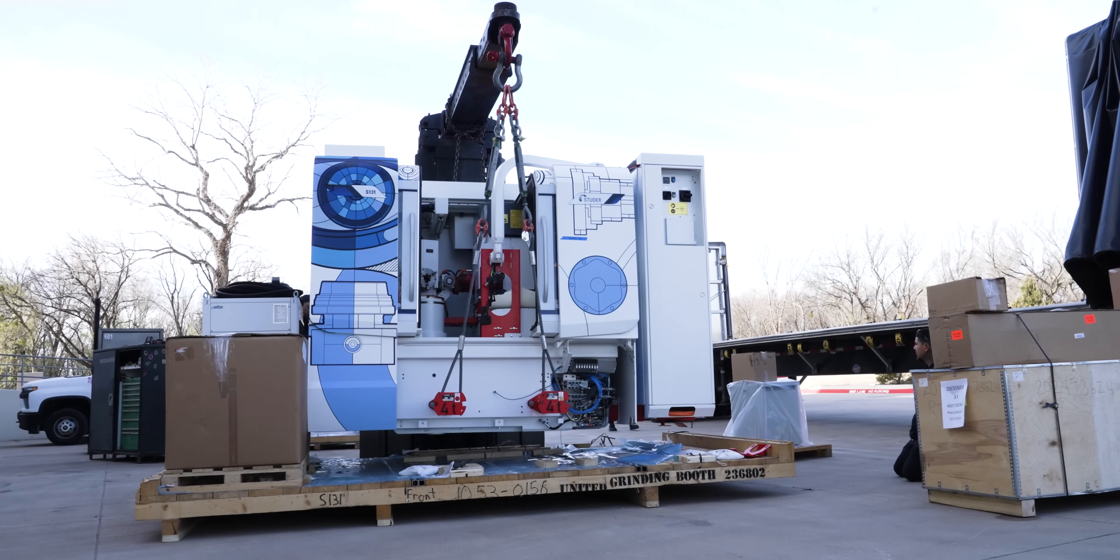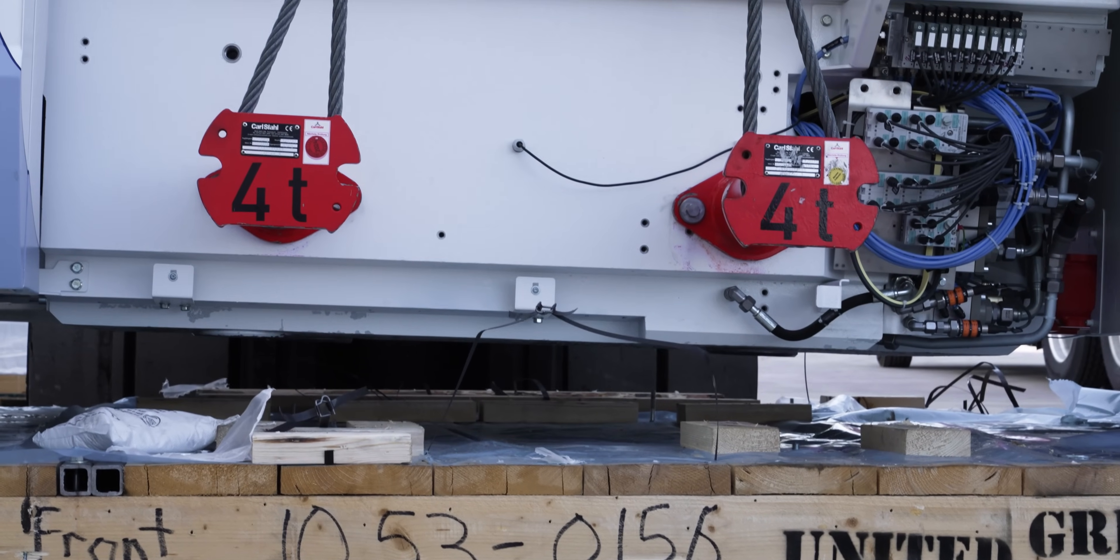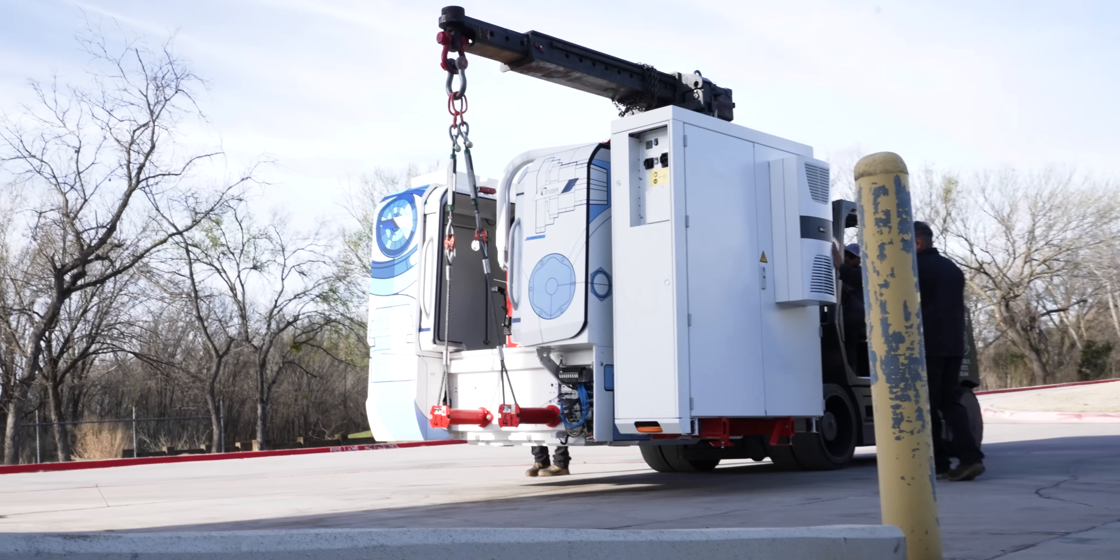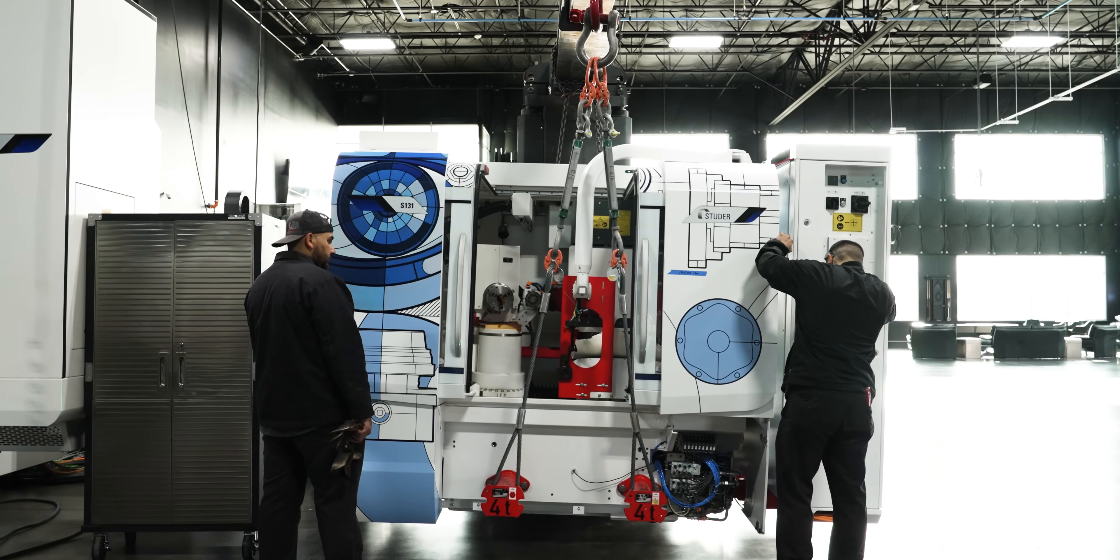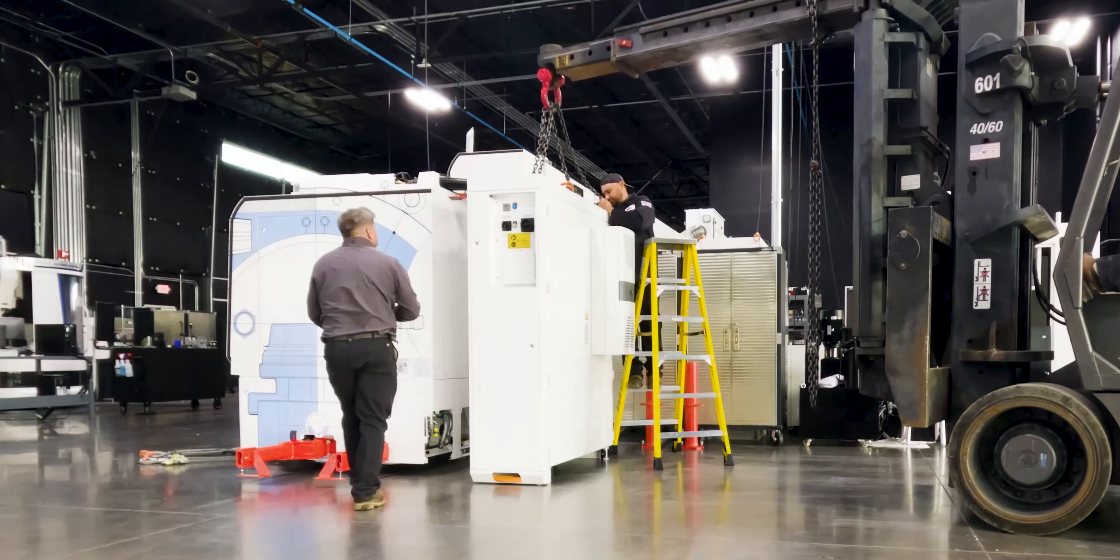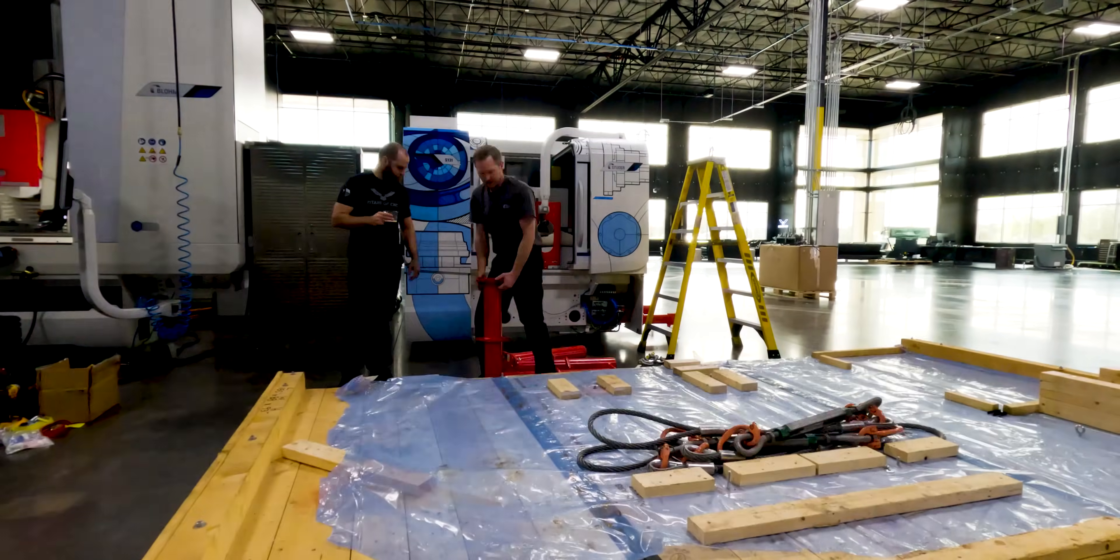So just like all the other machines we've had, this S131R is going to come with the Granitan base. That's going to give thermal stabilization, which means increased dimensional accuracy, and it's going to allow the cooling to flow through that table and cool everything down so everything stays at the right temperature.